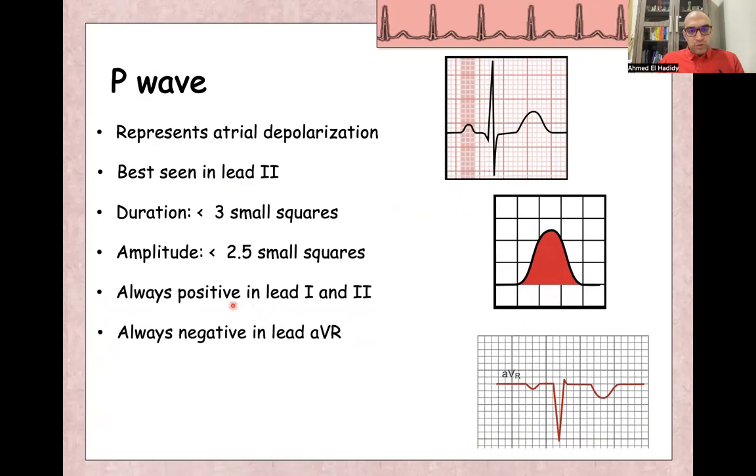P wave is always positive in lead one and lead two, and always negative in lead AVR, and usually it's biphasic in lead V1.